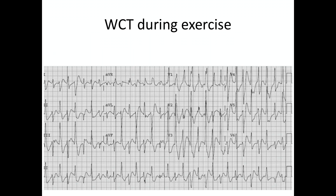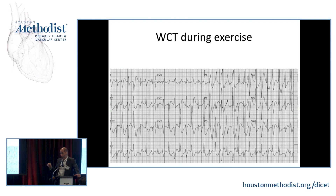A patient with syncope during exercise shows two alternating QRS morphologies — QRS alternans. Both have right bundle branch block morphology: one with left anterior fascicular block and one with left posterior fascicular block. This is bidirectional tachycardia, typical of catecholaminergic polymorphic VT. This can also be seen with digoxin toxicity. It is a calcium-driven arrhythmia due to delayed afterdepolarizations from calcium overload.